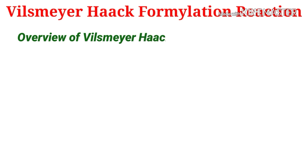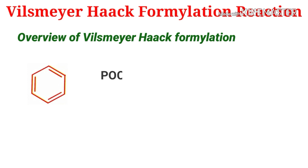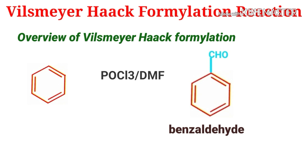Here is the overview of the Vilsmeier-Haack formylation reaction: benzene is treated with phosphorus oxychloride and a secondary amine — N,N-dimethylformamide — followed by hydrolysis to give an aryl aldehyde. In this case, the product is benzaldehyde. Now let us go to the mechanism of this formylation reaction.